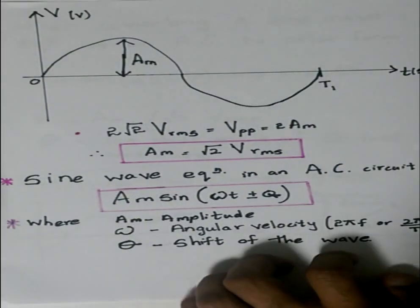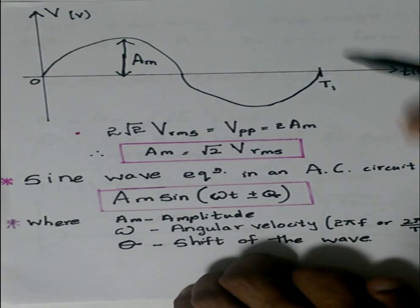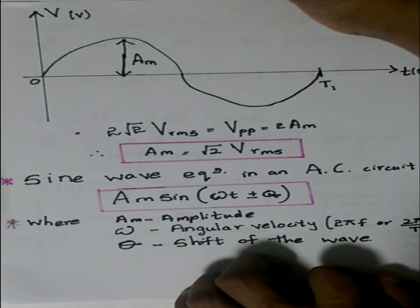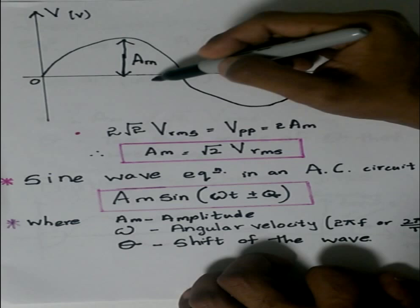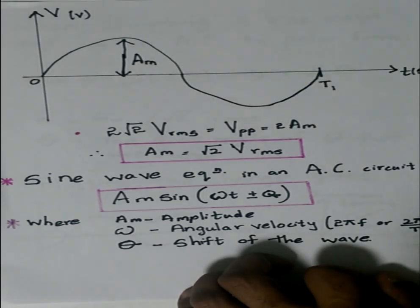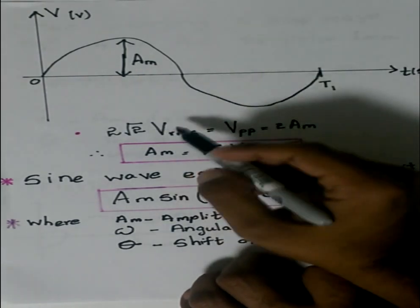An alternating current could be represented in a sine wave in terms of voltage and time in this manner, where Am shows the maximum amplitude of the wave. We know from the theory of an alternating current that...